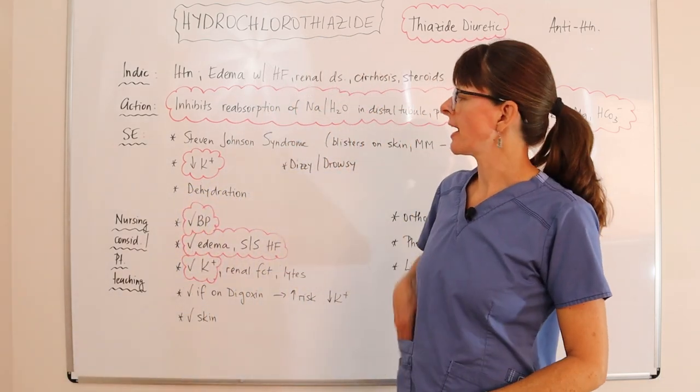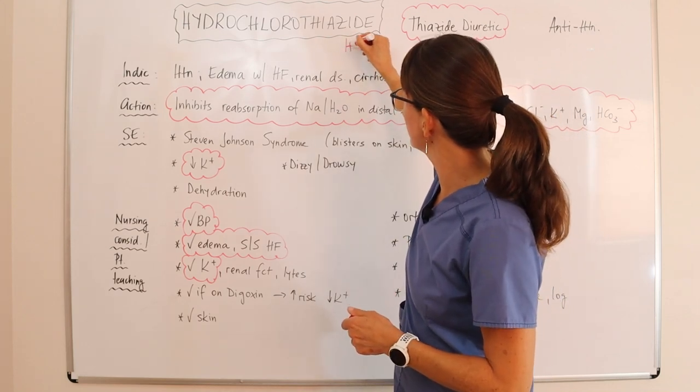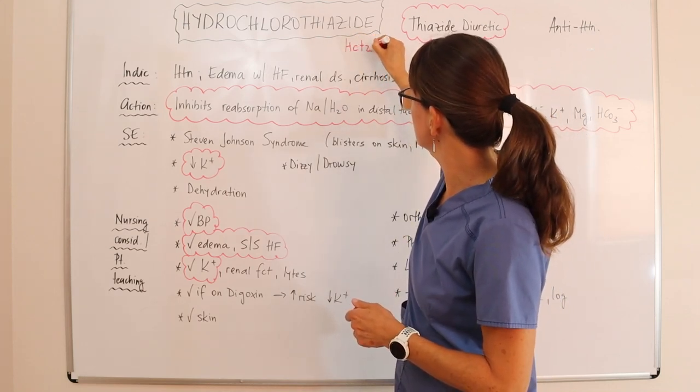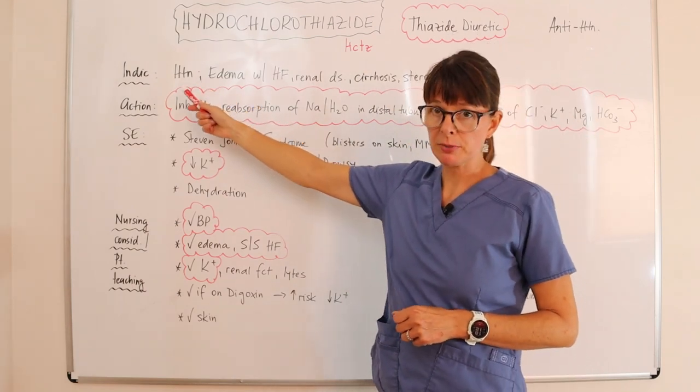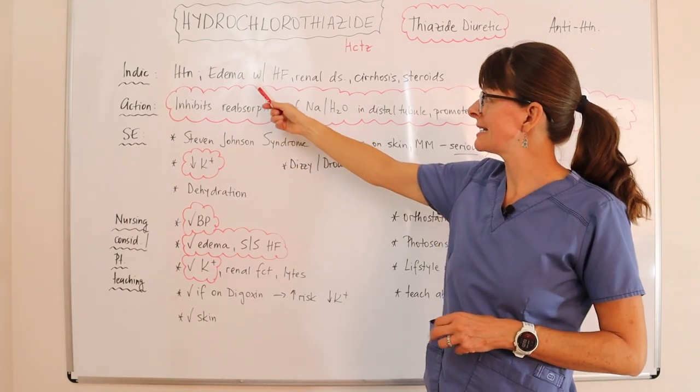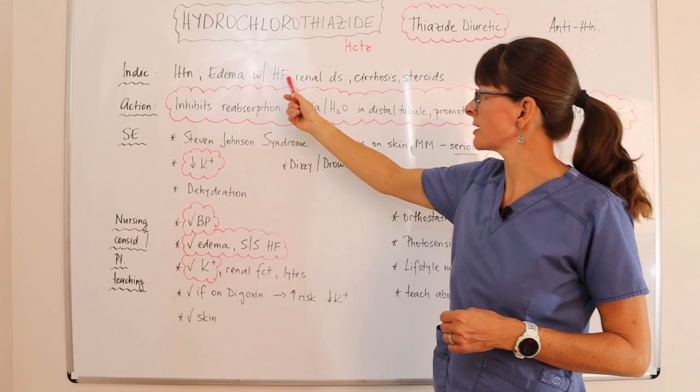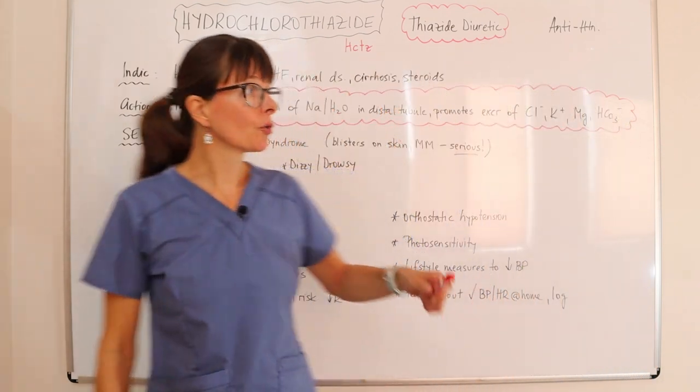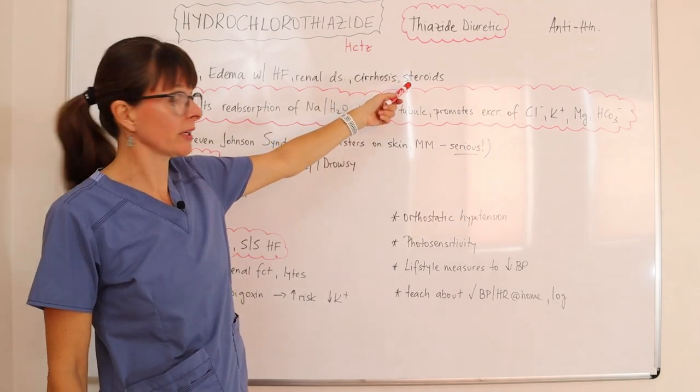So hydrochlorothiazide, which many times is abbreviated as HCTZ for short, is indicated for the treatment of hypertension and edema that's associated with certain conditions such as heart failure, renal disease, cirrhosis, as well as steroids.